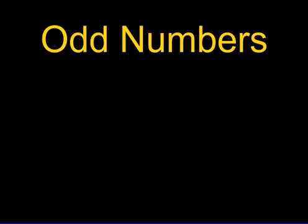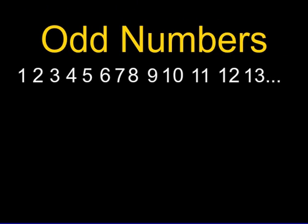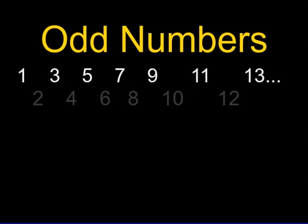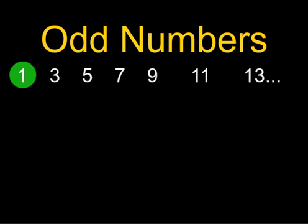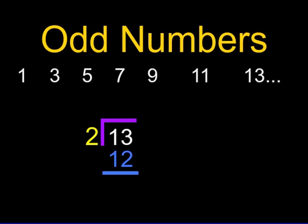The next definition is for odd numbers. Odd numbers are the whole numbers that are not divisible by 2. These include 1, 3, 5, 7, 9, 11, 13, and so on. 2 does not divide neatly into any of these numbers. There will always be a remainder left over.